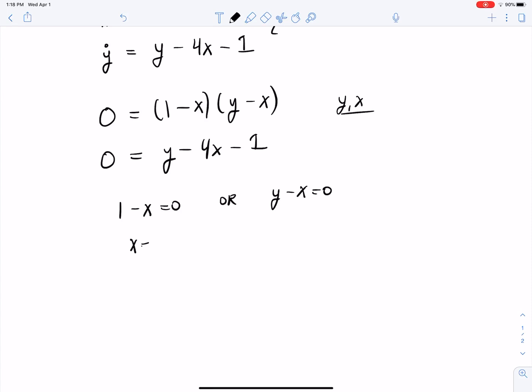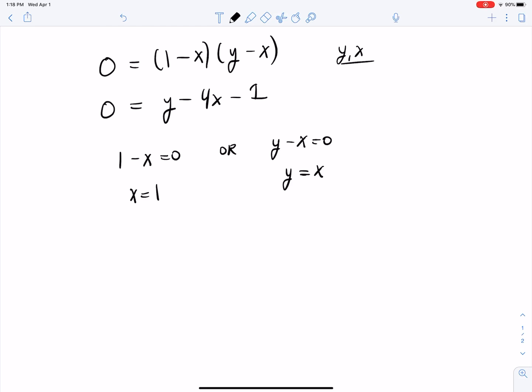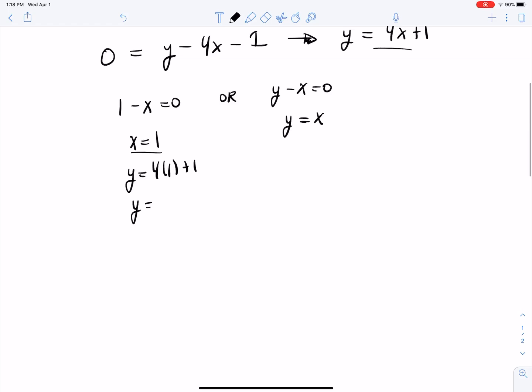So this tells me, gives me a solution x equals one and this gives me a set of solutions y equals x. So then we can take that and plug it in here. So this second equation I could rewrite as maybe y equals four x plus one. So then this solution is pretty easy to plug into so I should get y equals, so that's y equals five. So my first critical point would be one five.